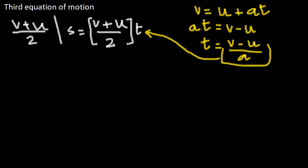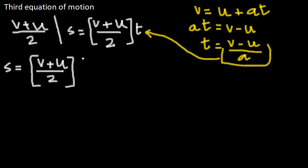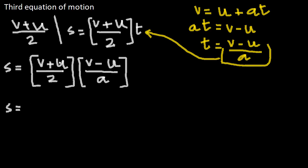So we write s is equal to the earlier expression v plus u divided by 2, and now in place of t we plug in the value from the first equation of motion, which is v minus u divided by a. If we simplify this further, what we get is s equal to v plus u into v minus u, which gives us v squared minus u squared — you may already be familiar with the identity a plus b into a minus b equals a squared minus b squared — so v plus u into v minus u is v squared minus u squared, divided by 2a.